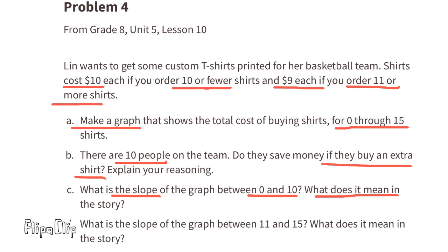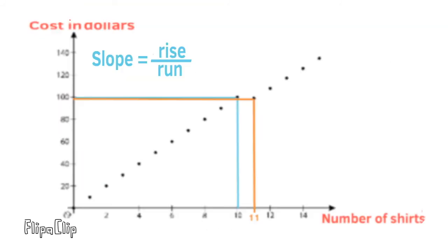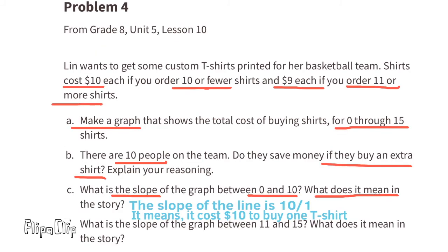C. What is the slope of the graph between 0 and 10? What does it mean in the story? The slope of the graph will be rise over run. And from 0 to 10 the rise is 100 and the run is 10. That's a slope of 100 divided by 10 or 10. So the slope is 10. That means it costs $10 to buy one t-shirt.